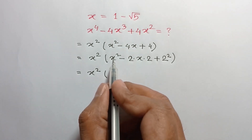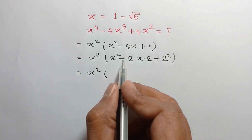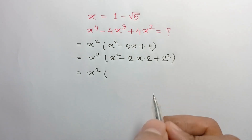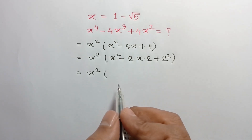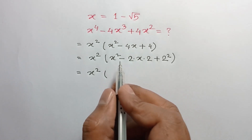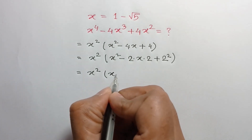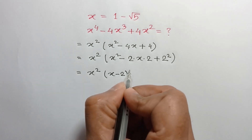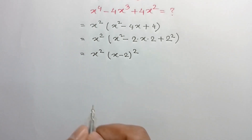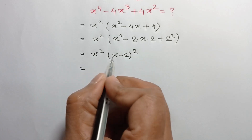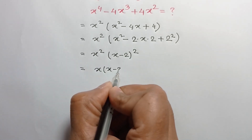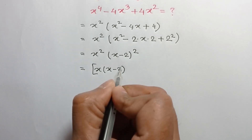Now 4x can be written as 2 times x times 2, and 4 can be written as 2 squared. According to the formula a squared minus 2ab plus b squared equals a minus b whole squared, we can write this as x squared times x minus 2 whole squared, which equals x times x minus 2 whole squared.